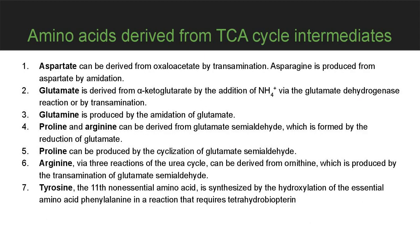Aspartate can be derived from oxaloacetate by transamination. Asparagine is produced from aspartate by amination. Glutamate is derived from alpha-ketoglutarate by addition of ammonium ion via the glutamate dehydrogenase reaction or by transamination. Glutamine is produced by the amination of glutamate. Proline and arginine can be derived from glutamate semialdehyde, which is formed by the reduction of glutamate. Arginine, via reactions of the urea cycle, can be derived from ornithine, produced by transamination of glutamate semialdehyde.